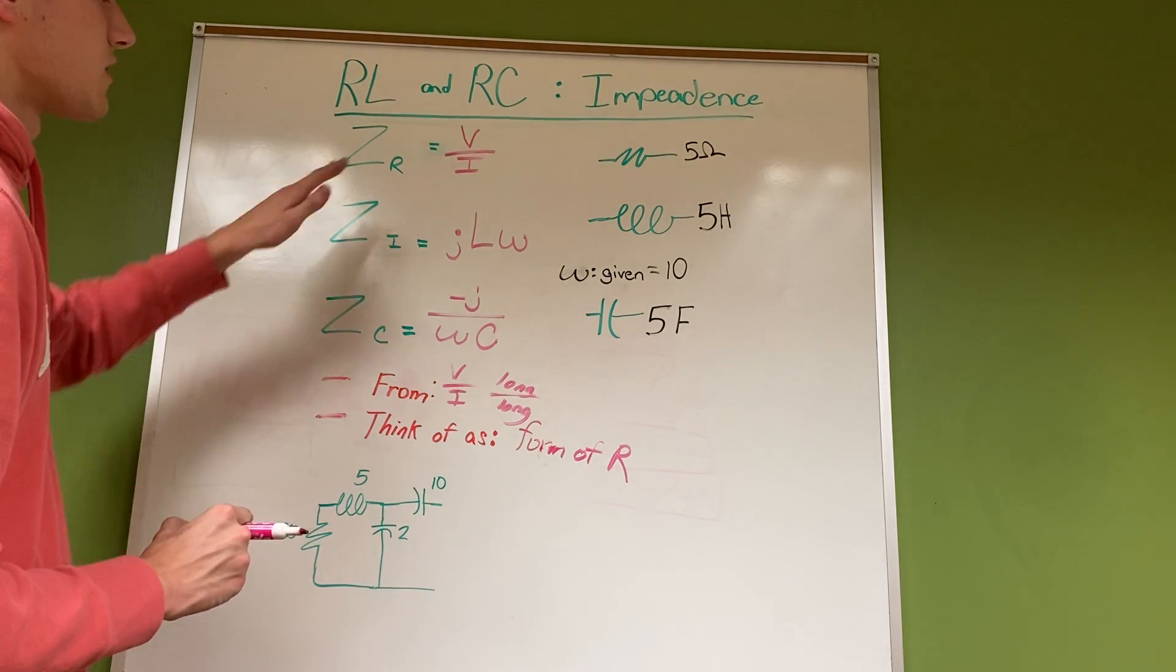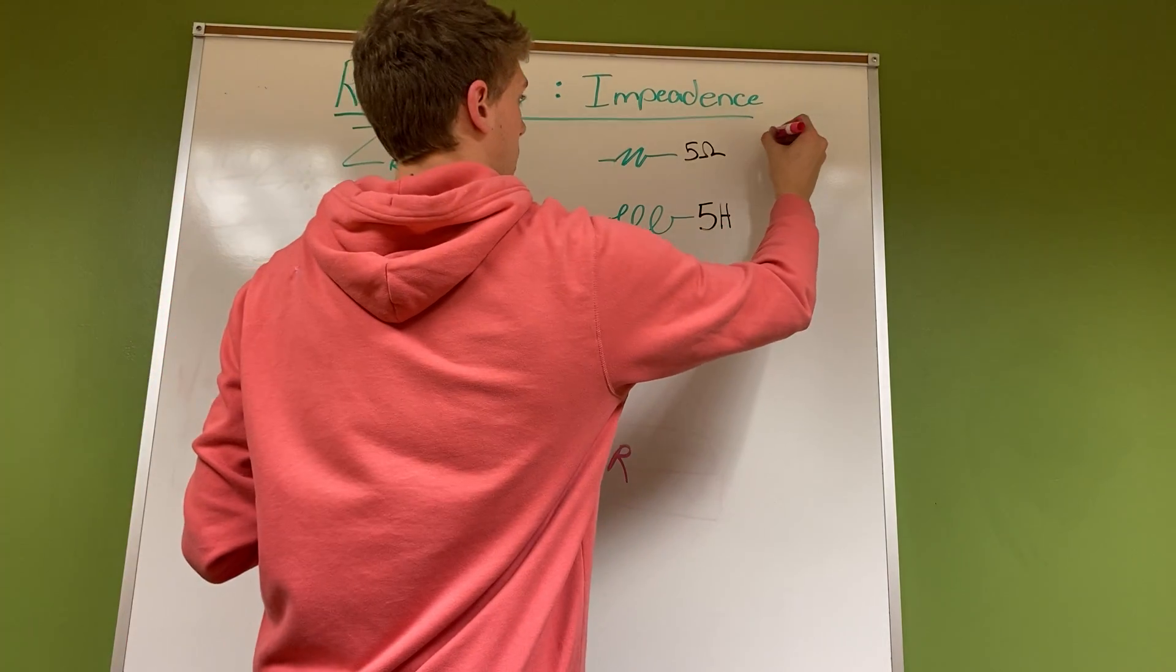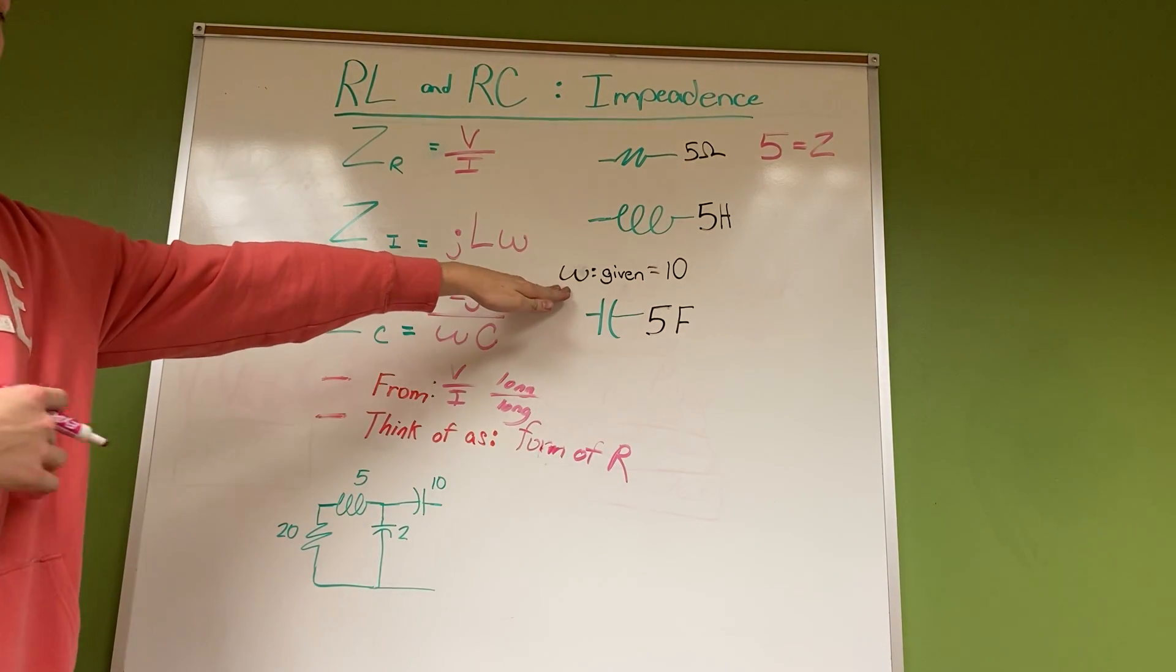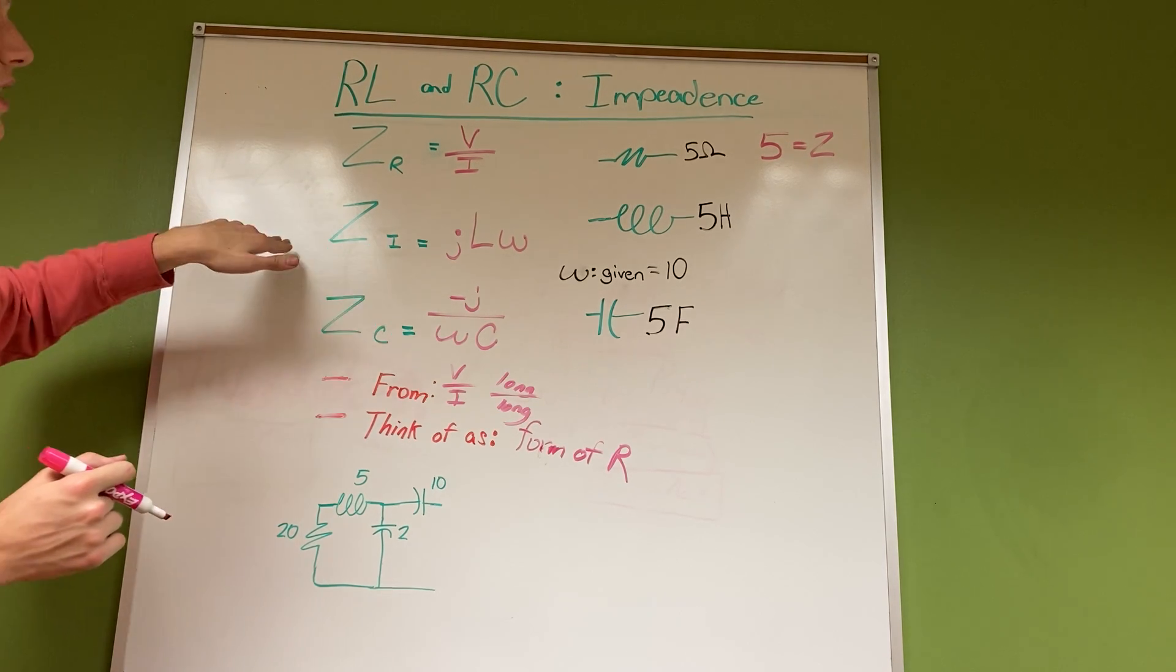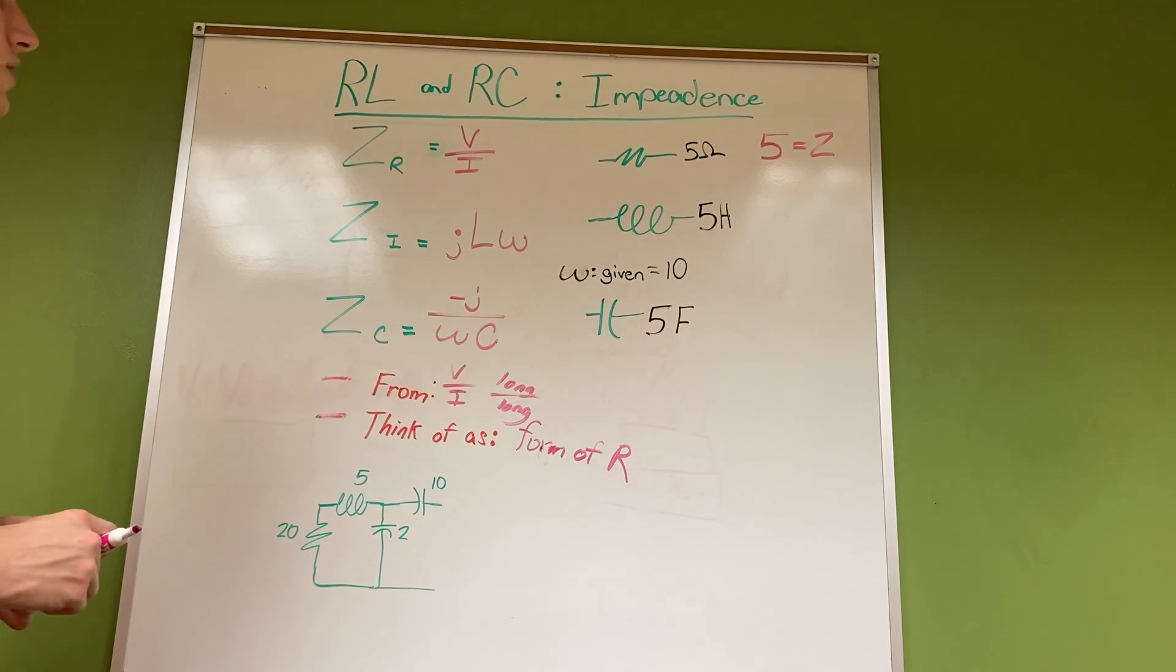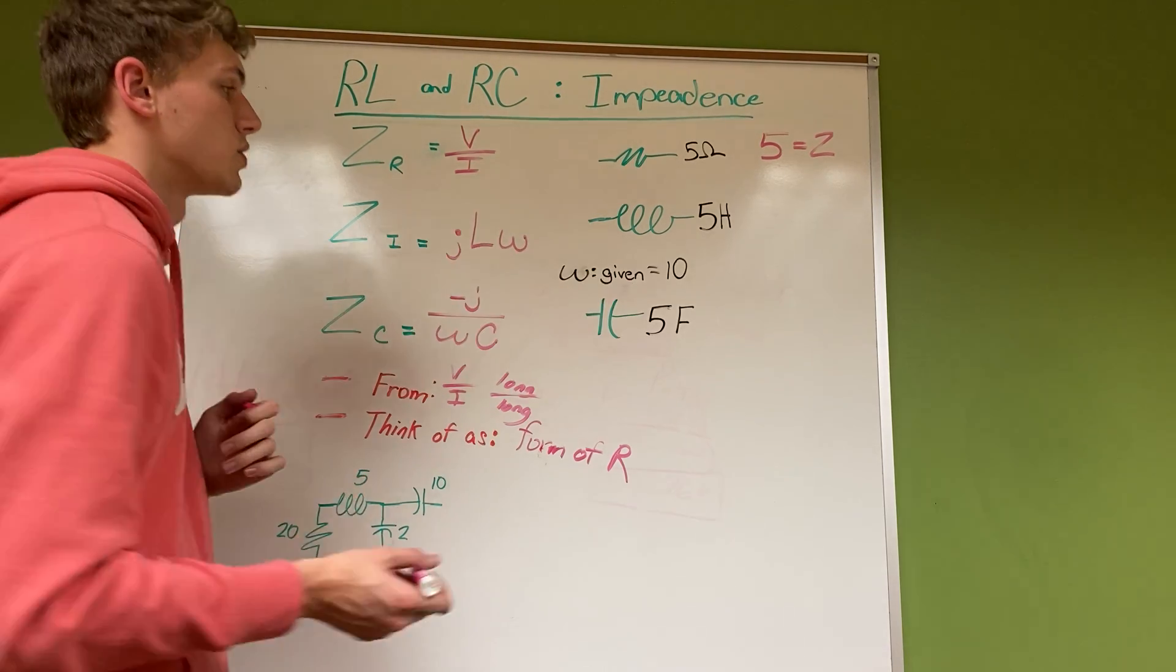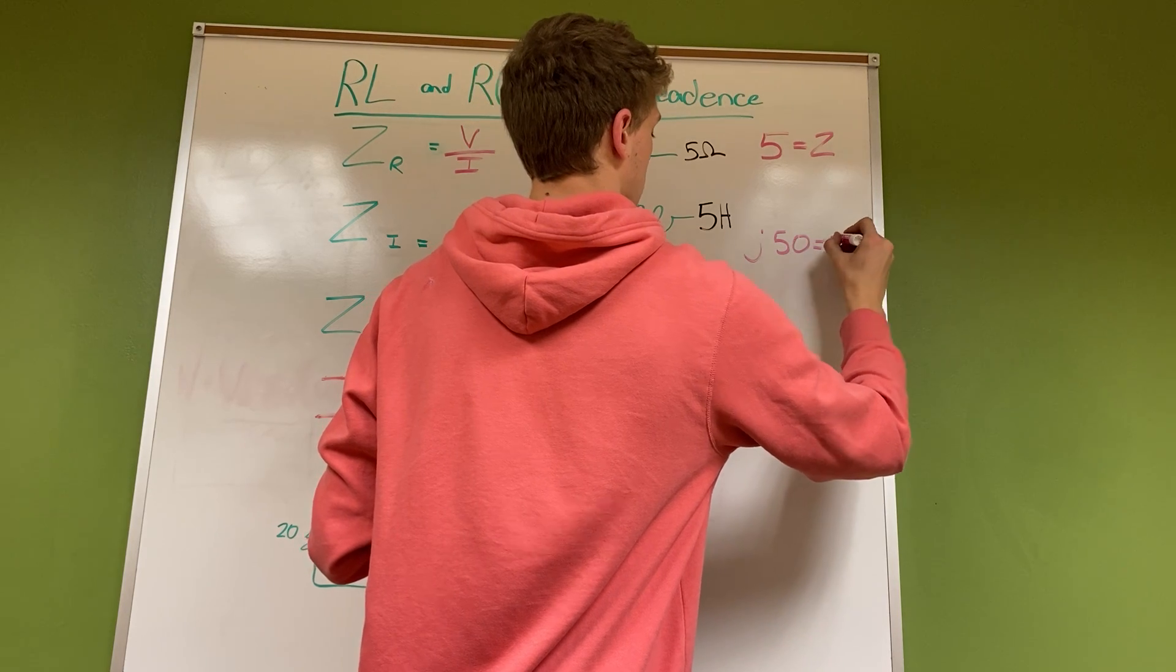Looking at this, if I've given 5 ohms, that's already given - we're going to think Z is 5. Then for this one, I gave you omega as 10, and for the impedance of a 5 henry inductor, we're going to think about it as j5 times 10, which would be j50 equals Z.